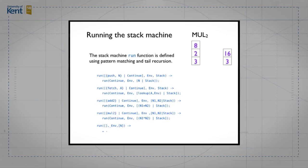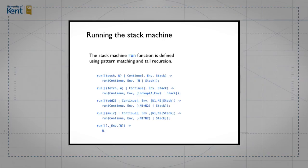There is a final case where there are no instructions left. In that case we assume there is exactly one value left on the stack and we return that value. If there's more than one value or no value, an error is raised. We only cover the correct cases because we assume the stack machine is running properly compiled code, not arbitrary code.